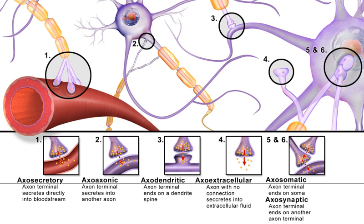Physicist David Bohm presented his ideas of holomovement and implicate and explicate order. Pribram became aware of Bohm's work in 1975 and realized that, since a hologram could store information within patterns of interference and then recreate that information when activated, it could serve as a strong metaphor for brain function. Pribram was further encouraged by the fact that Devaloir and Devaloir established that the spatial frequency encoding displayed by cells of the visual cortex was best described as a Fourier transform of the input pattern.